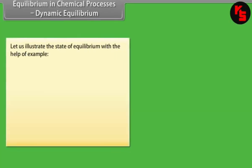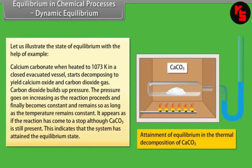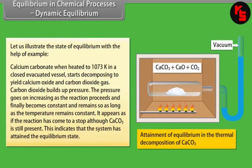Consider the state of equilibrium with an example. Calcium carbonate, when heated to 1073 Kelvin in a closed evacuated vessel, starts decomposing to yield calcium oxide and carbon dioxide gas. Carbon dioxide builds up pressure, which goes on increasing as the reaction proceeds and finally becomes constant as long as the temperature remains constant. It appears as if the reaction has stopped although CaCO₃ is still present — this indicates the system has attained the equilibrium state.